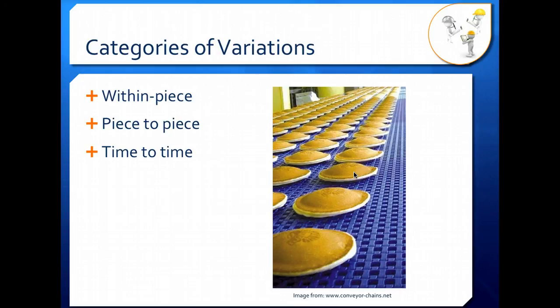Then we have time-to-time variation, which is variation between batches. Let's say this particular batch of pancakes has an average weight of each pancake being 75 grams. The next batch we put out may have an average weight of 77 grams. The batch after that may have an average weight of 74 grams. So we're getting variation over time in our process.